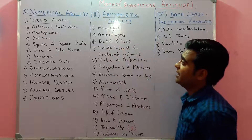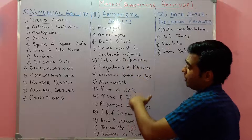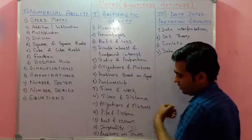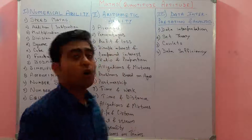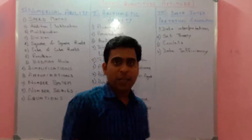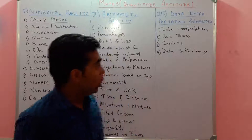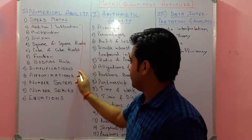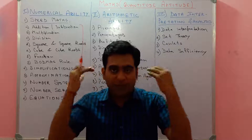In arithmetic ability there are around 15 topics: averages, percentages, profit and loss, simple interest, compound interest, ratio and proportion, allegation and mixture, problems based on ages, problems based on trains, partnership, time and work, time and distance, pipes and cisterns, boats and streams, and inequality. These are all topics which previously came in bank exams and still come now, though things are changing day by day.